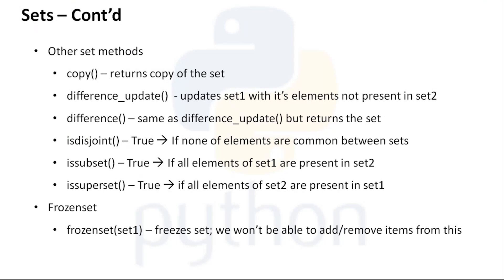We also have the copy() method, similar to list copy, to create a copy of a set. difference_update() and difference() have been covered. We also have isdisjoint() — two sets are disjoint when there are no common elements between them.